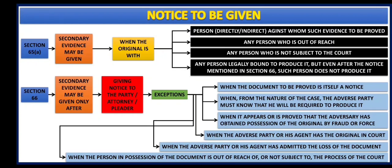The second scenario is when the original is with any person who is out of reach of the court. In that case we can give secondary evidence in place of primary evidence. And the third one: if the original is with any person who is not subject to the court, in that case also secondary evidence may be given.